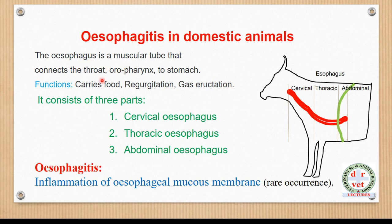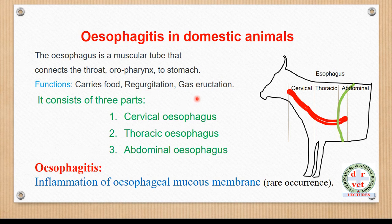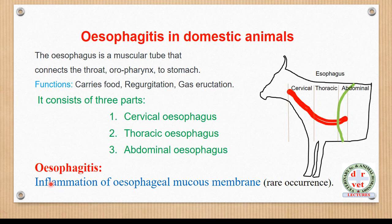The esophagus is a muscular tube that connects the throat and oropharynx to the stomach or ruminant forestomach. The function of the esophagus is to carry food and water, and to facilitate regurgitation of food material from the rumen to the mouth, and eructation of gas. The esophagus consists of three parts: cervical esophagus in the cervical region, thoracic esophagus in the thoracic region, and abdominal esophagus in the abdominal region.